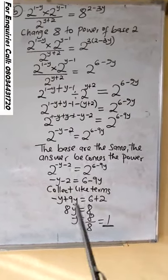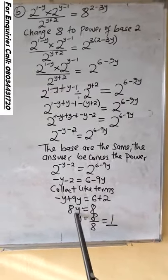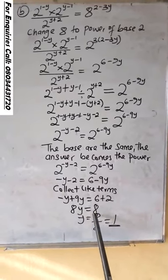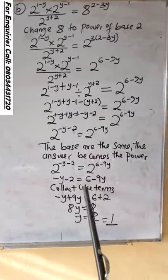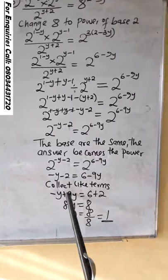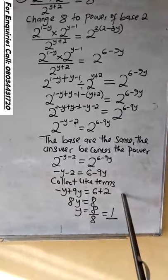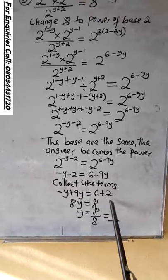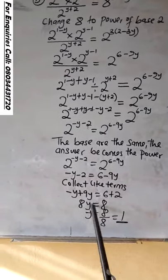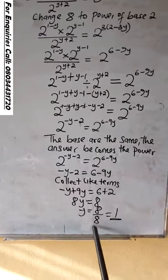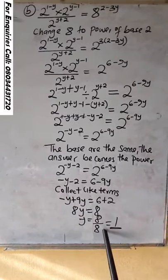Collect like terms. When you do that, you are going to have 8y equals to 8. Minus y and minus 9y will come to this side to become plus 9y. This is 6. Minus 2 will go to the other side and become plus 2. So, divide both sides by 8. Our answer will be what? Y equals to 1.